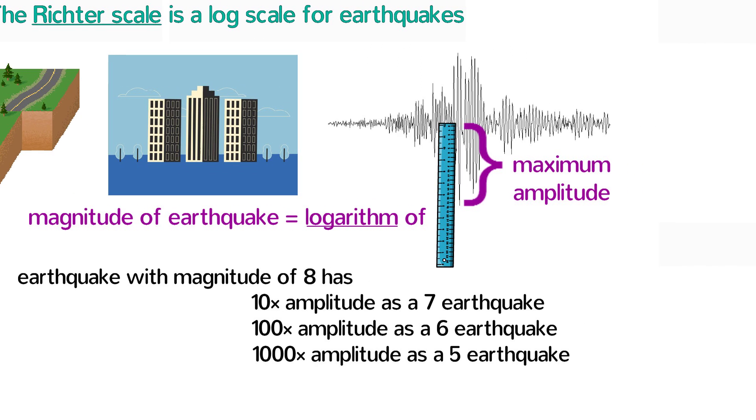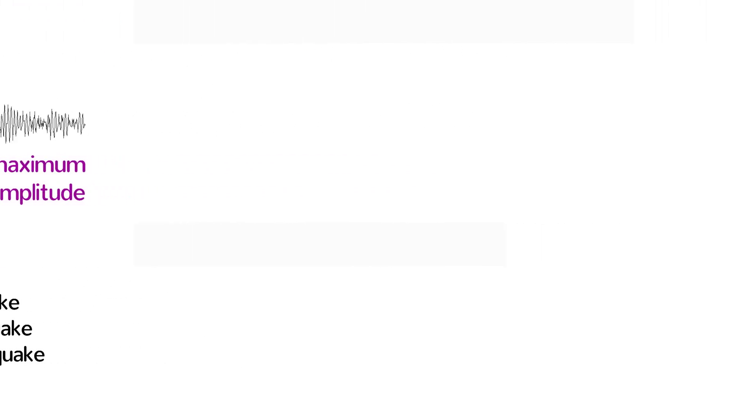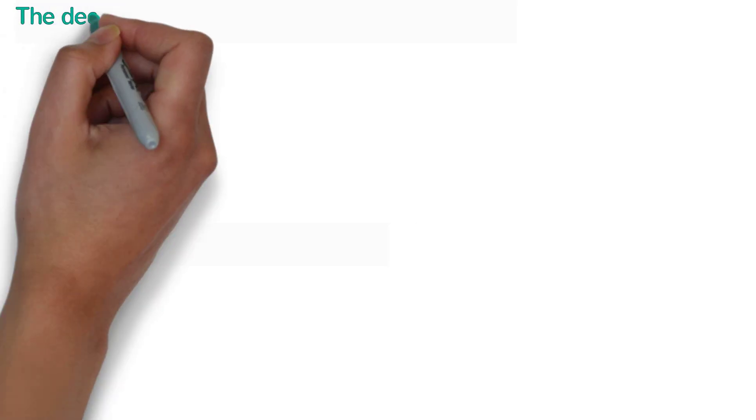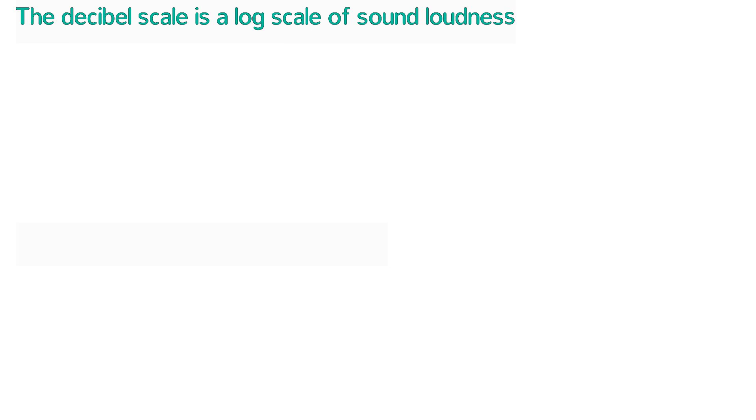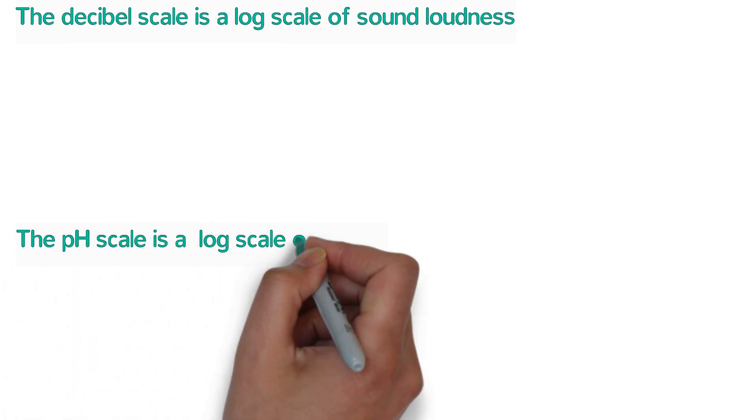Two other common log scales are the decibel scale and the pH scale. The decibel scale is a log scale of sound intensity or loudness, and the pH scale is a log scale of acidity.